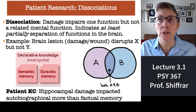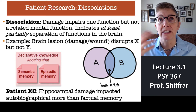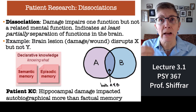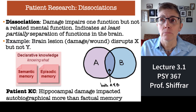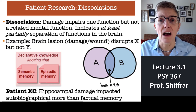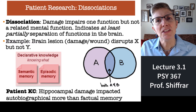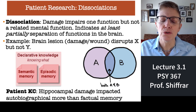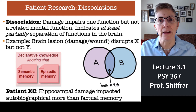For example, if I were KC, I might forget my wedding but remember the contents of a cognitive psychology textbook. KC was used to support the idea that different kinds of knowledge might be processed in different parts of the brain.